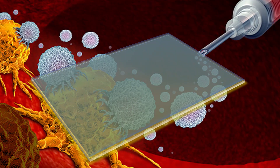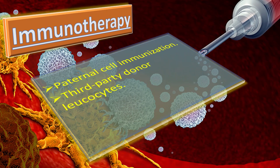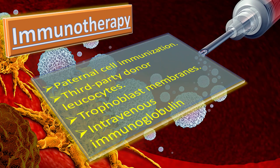Regarding the role of immunotherapy: we have different types of immunotherapy, including paternal cell immunization, third-party donor leukocytes, trophoblast membrane, and intravenous immunoglobulin. In women with previous unexplained recurrent miscarriages, this immunotherapy does not improve the live birth rate.